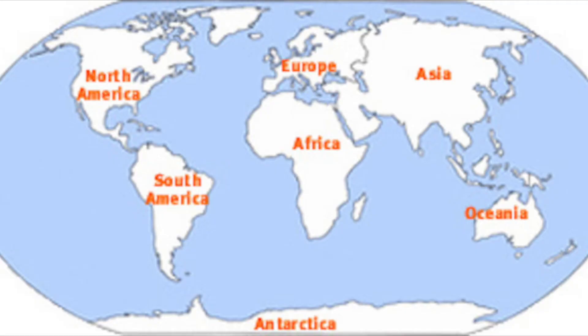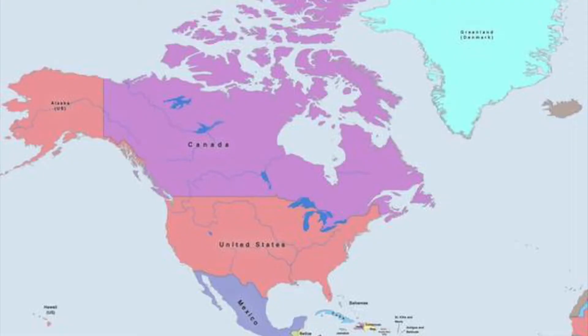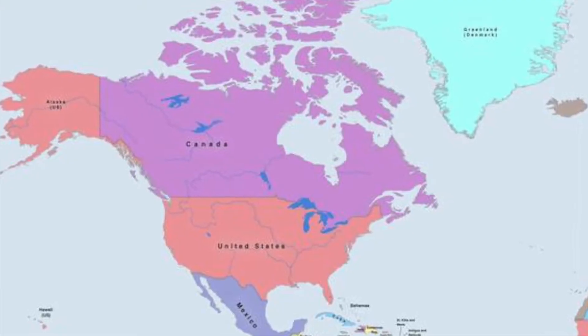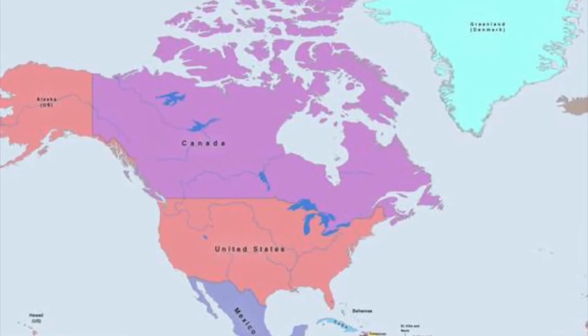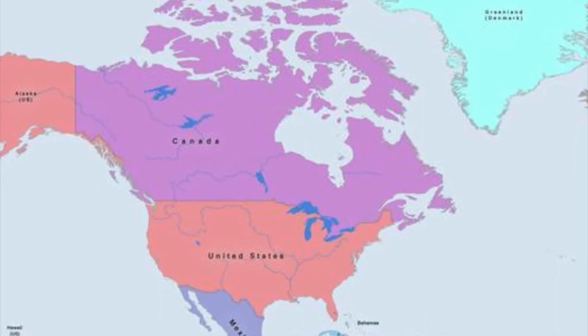To begin, here is an image showing the seven continents: North America, South America, Africa, Europe, Asia, Australia, and Antarctica. You can see North America on the left side of the map directly above South America.